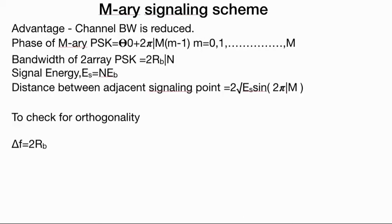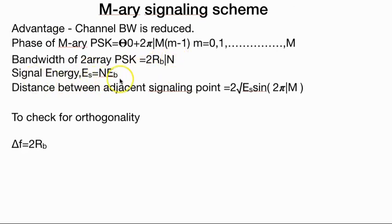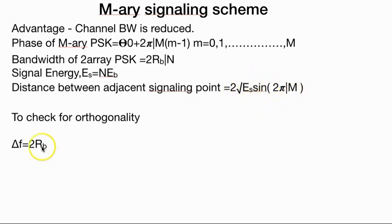M-ary signaling scheme: for M-ary, the channel bandwidth is reduced, which is 2Rv/N. The bit error is reduced by N. The signal energy is N into Eb. To check for orthogonality, delta-F equals N·Rv/2.